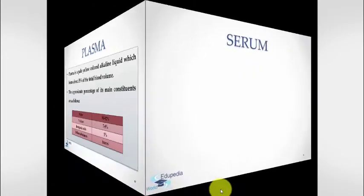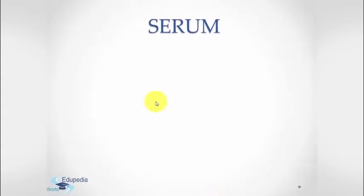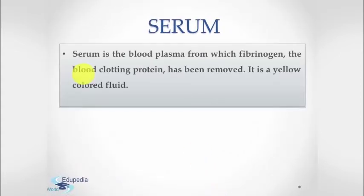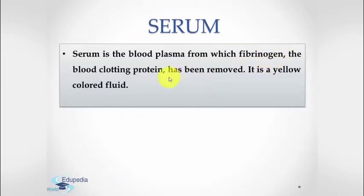Next is serum. Serum is the blood plasma from which fibrinogen, the blood clotting protein, has been removed. It is a yellow colored fluid.